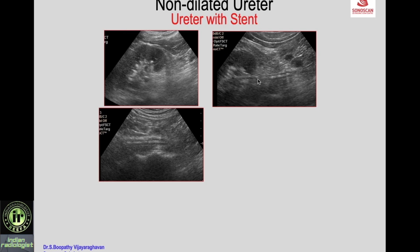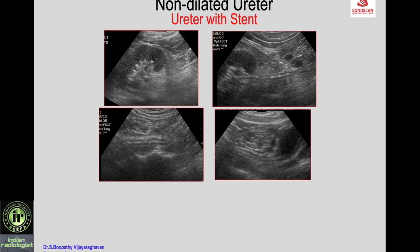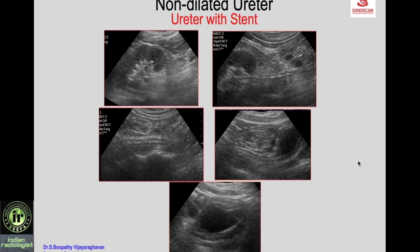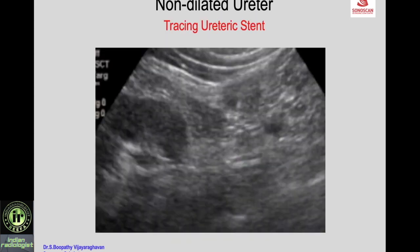You can trace the upper ureter, mid ureter, the level of pelvic crossing, and the lower ureter. You can see the stent entering the urinary bladder through the ureterovesical junction and also see the stent in the bladder. With the stent in the non-dilated ureter, you can use it as a guide to trace the non-dilated ureter, as will be shown in the video.